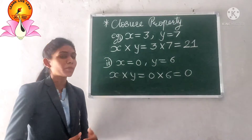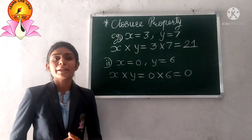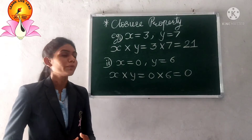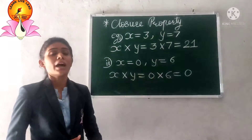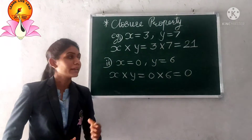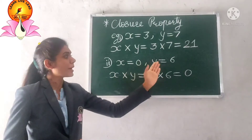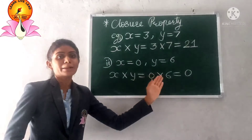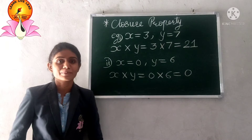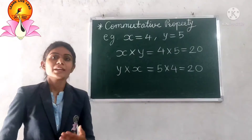The first property is the closure property. If x and y are two whole numbers, the multiplication of two whole numbers will also be a whole number. For example, 3 and 7 are two whole numbers; on multiplying them we get 21, which is also a whole number. Similarly, x = 0 and y = 6; on multiplying them we get 0, which is also a whole number. So the closure property is satisfied by multiplication.